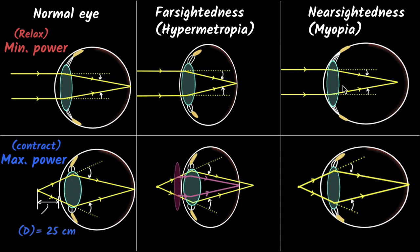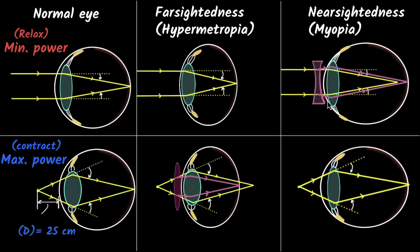How do you correct myopia? You want to reduce the converging power so that the focus moves back onto the retina. To reduce the converging power, you use a diverging lens. The diverging lens spreads the rays of light slightly, and when the eye then converges them, they focus back onto the retina. So by using a diverging lens, you can correct myopia.